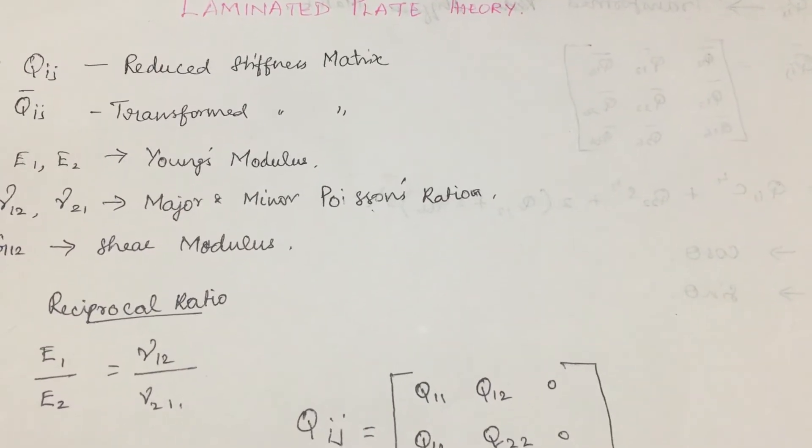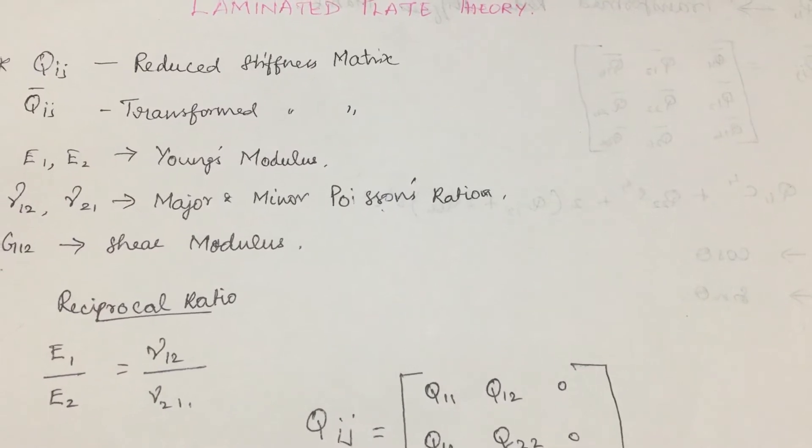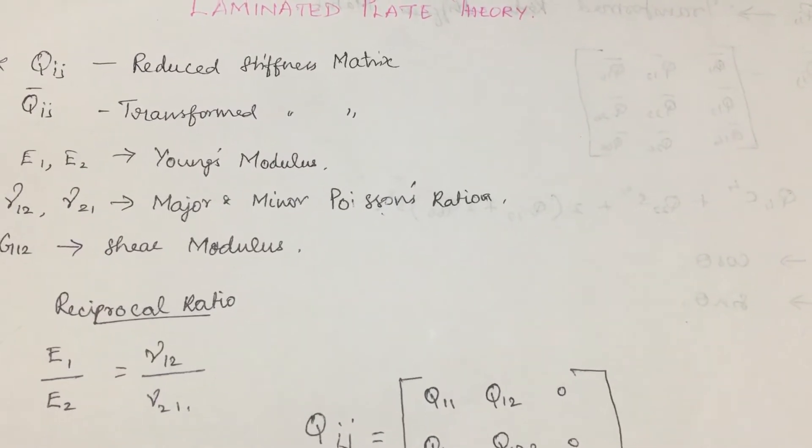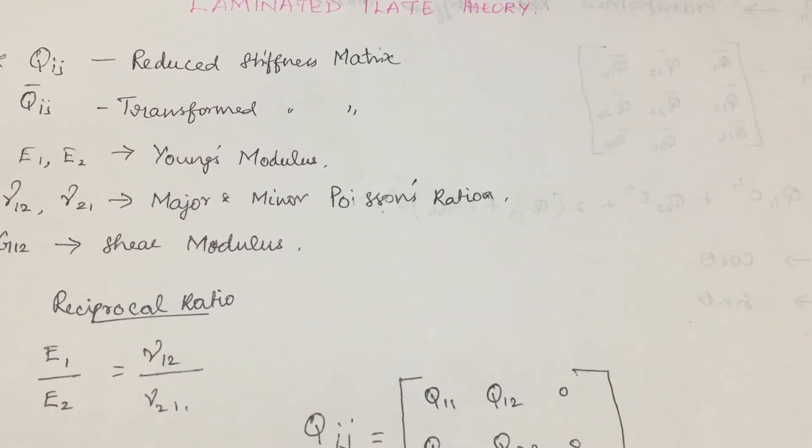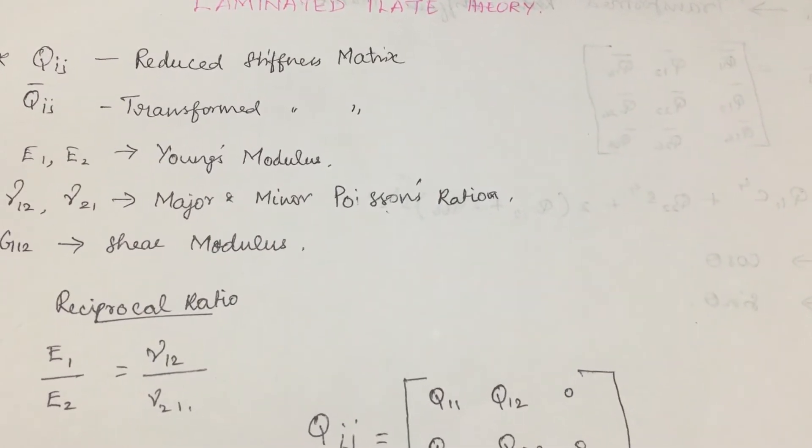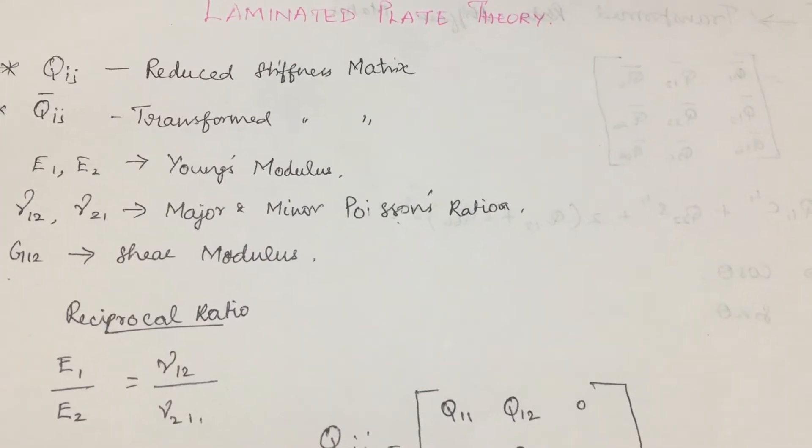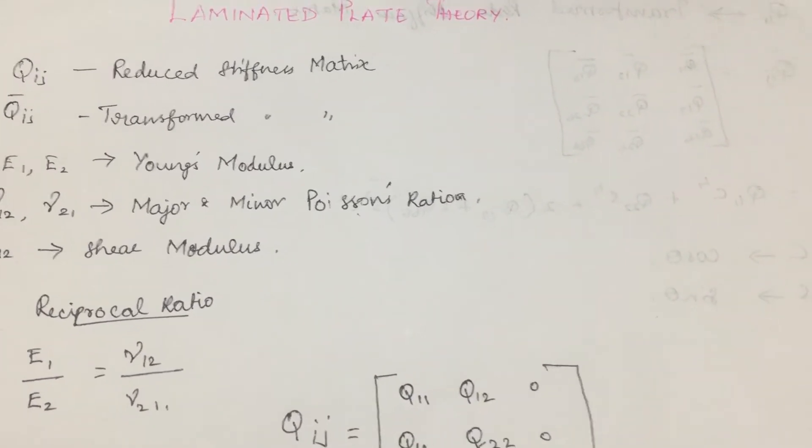Mu12 is the major Poisson's ratio, mu21 is the minor Poisson's ratio. E1 stands for Young's modulus in the longitudinal direction, E2 for Young's modulus in the transverse direction. Next is qij, which is the reduced stiffness matrix.